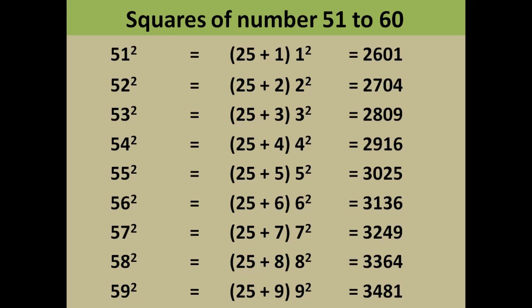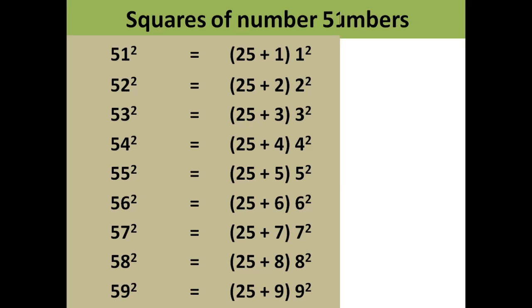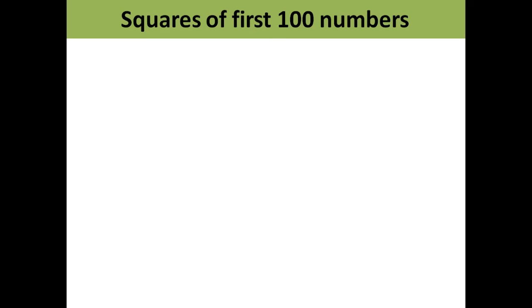So you have learnt eight more numbers. You will exclude 55 because we have counted it earlier also. So you are left with now 64 actual numbers that you have to learn. Till this time we have learnt 36 numbers, we are left with 64 numbers. For 64 numbers, what you will do is: